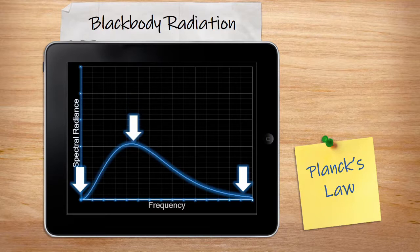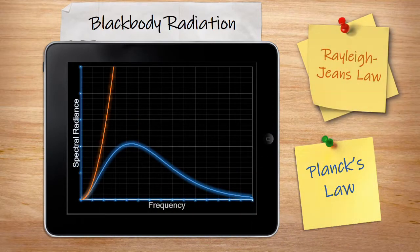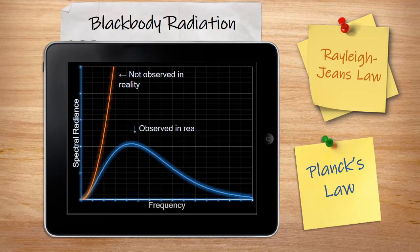Black body radiation is also a key proof of quantum mechanics, because the best prediction made by classical mechanics, with a continuous and non-quantized energy, is painfully wrong. The best prediction shows an infinite amount of high frequency light being emitted at every temperature, which is clearly nonsense and doesn't happen.